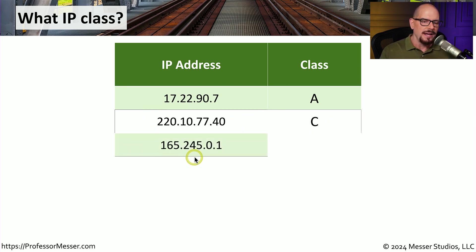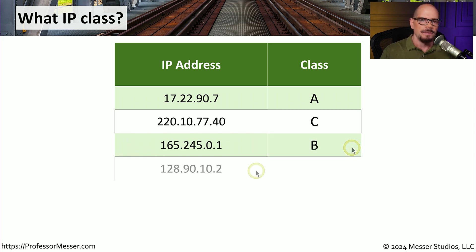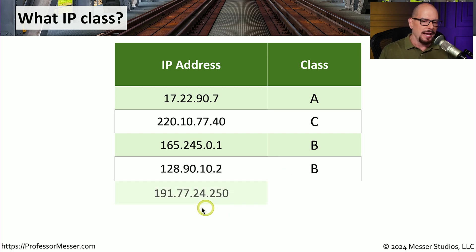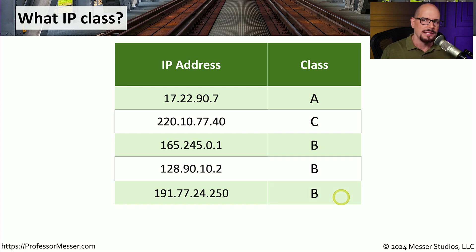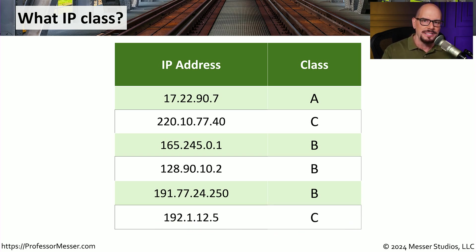The IP address 165.245.0.1 has a first octet of 165, which is in the range of a class B address. Next, 128.90.10.2 — that first number is 128, which is also a class B address. The address 191.77.24.250 has a first octet of 191, and 191 is in the range of a class B address. Finally, 192.1.12.5 has a first octet of 192, which falls in the range of a class C address.